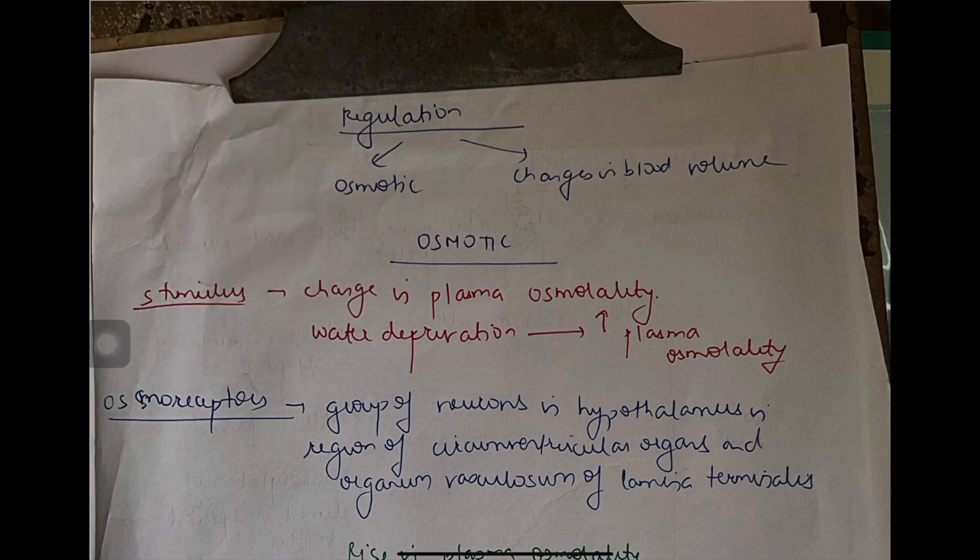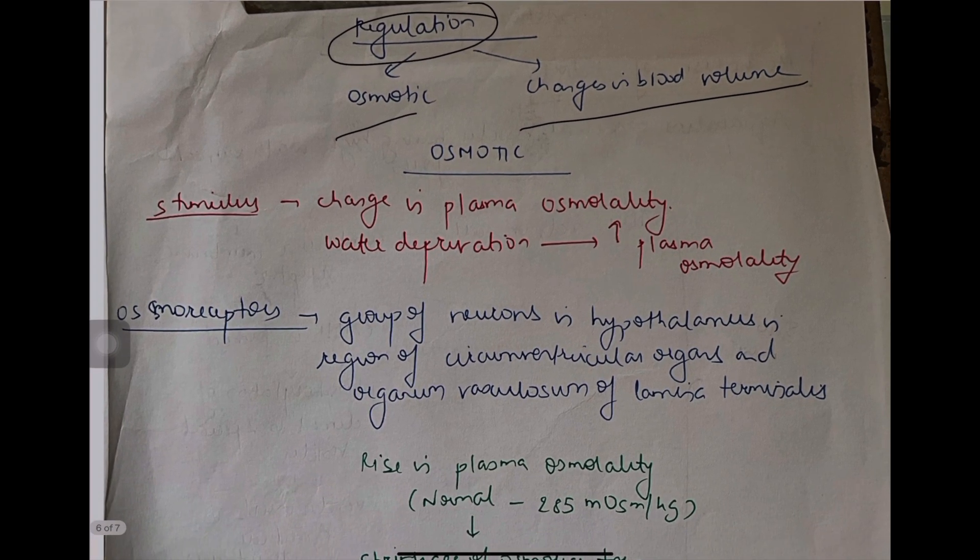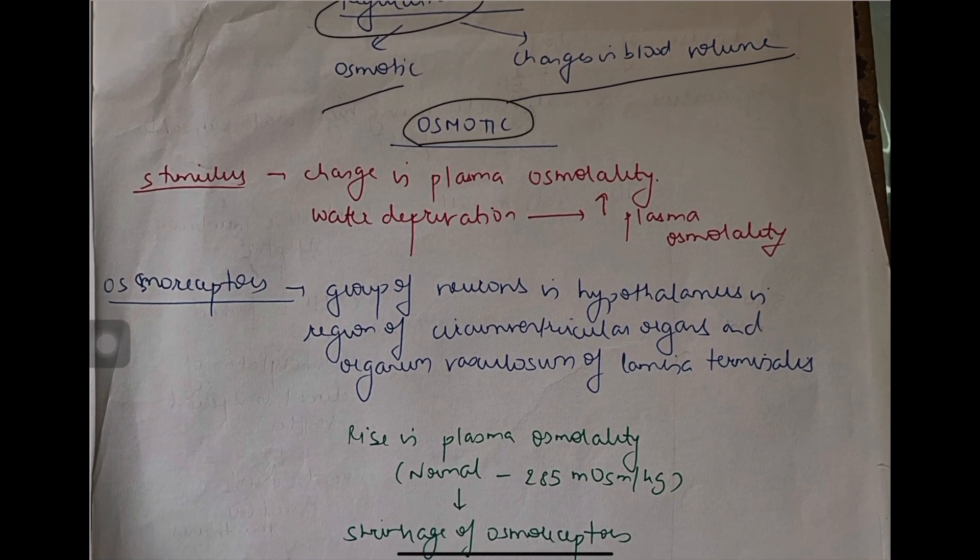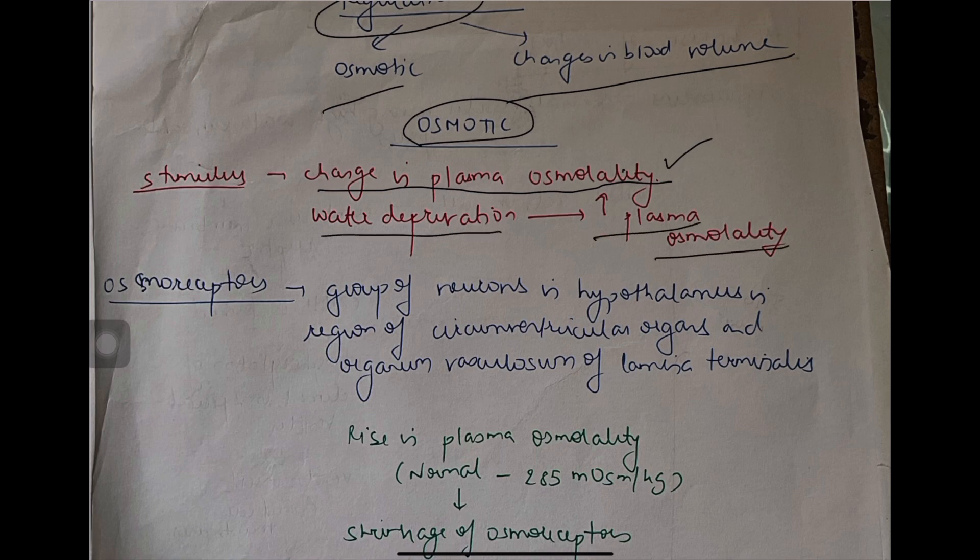Regulation is of 2 types. You have regulation osmotic and changes in blood volume. Now let us see osmotic. What is the stimulant for osmotic? You have changes in plasma osmolality. Not osmolarity, it is L-I-T-Y. Water deprivation causes increase in plasma osmolality. Because water is less, the minerals increase. That is why increase in plasma osmolality.